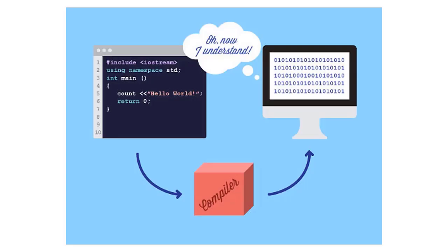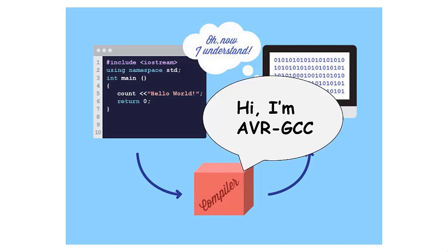Enter the compiler. Compiling a program in Arduino is referred to as verifying — the terms mean the same thing, so throughout these tutorials we'll use them interchangeably. The compiler first transforms the code you write into assembly language. The name of the compiler we'll be using on our UNO is AVRGCC. If you're new to this, it may sound kind of weird, but try not to get too hung up on it — it's just a name.